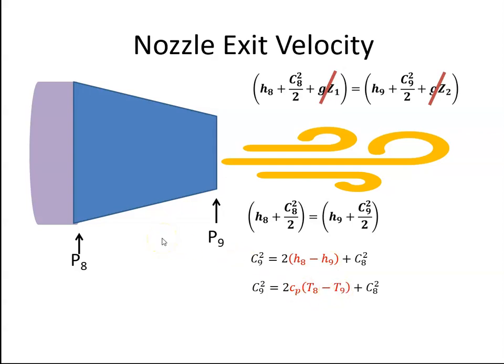But if we're talking about a gas turbine engine, the velocity here at the exit of the turbine is pretty small. And in fact, we could probably say it's negligible. And if we make that assumption,